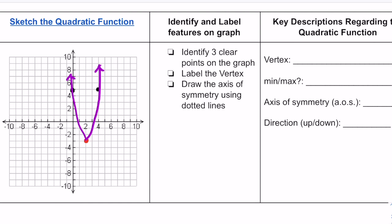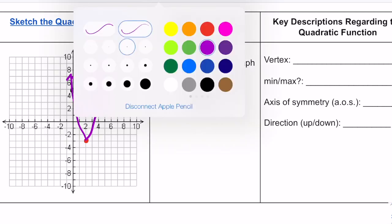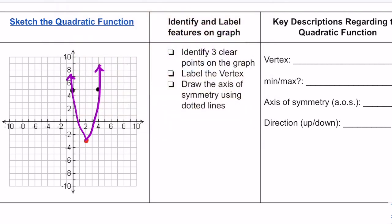Then the next step asks us to label the vertex. Remember, the vertex is either the smallest point or the highest point on the graph. Clearly the smallest point on this graph is right here. That's the lowest point that we see, which is 2, 3. So we can call this the vertex and we'll label it as the vertex and we'll write 2, 3 on the worksheet.